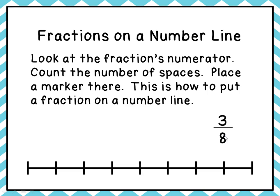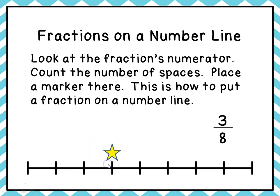Then we look at the numerator and count the number of spaces — remember, not the lines, but the spaces shown in our numerator. Since we're looking at three-eighths, we count three spaces: one, two, three. We put a marker right there to show three-eighths — eight spaces on the line altogether and we marked off three of them.